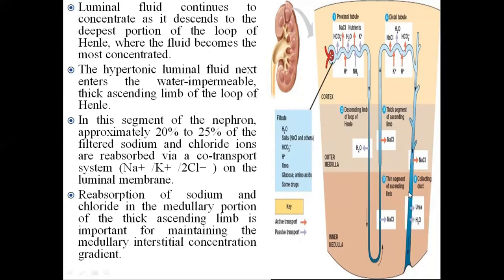Luminal fluid continues to concentrate as it descends to the deepest portion of the loop of Henle, where it becomes most concentrated. The hypertonic luminal fluid then enters the water-impermeable thick ascending limb of the loop of Henle. In this segment, approximately 20-25% of filtered sodium and chloride ions are reabsorbed via a co-transport system on the luminal membrane — a sodium-potassium-chloride ion exchange.